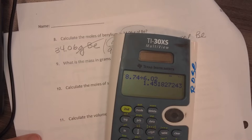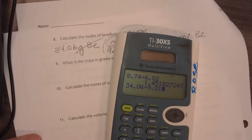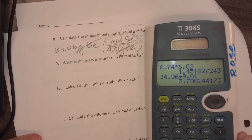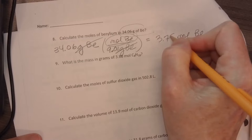So when I use my calculator, 34.06 divided by 9.01, I get 3.78, et cetera. We want to round it to the three significant figures. So we have 3.78 moles of beryllium.